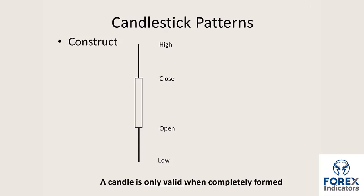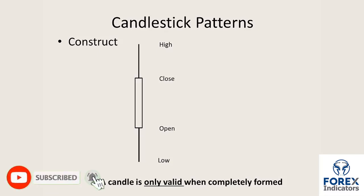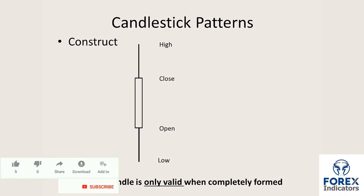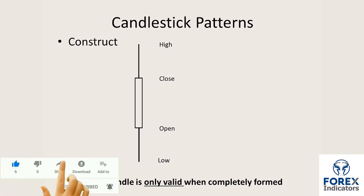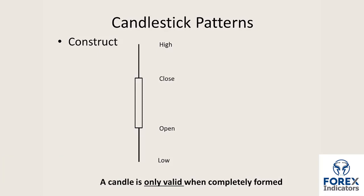The candle itself is only valid when it is completely formed. When the market opened it was at a certain level, it then moved down, likely forming a solid bar, then moved back up again, went right to its high price, and then closed further back down into the candle range. The lines between the high and the close, and the vertical line between the open and the low, are known as the candlestick shadow, tail or wick. The rectangular shape between the close and the open of the candlestick is known as the body.